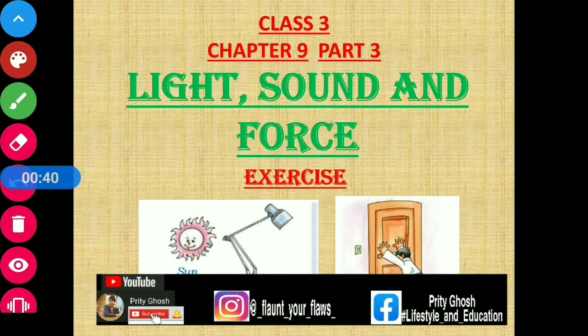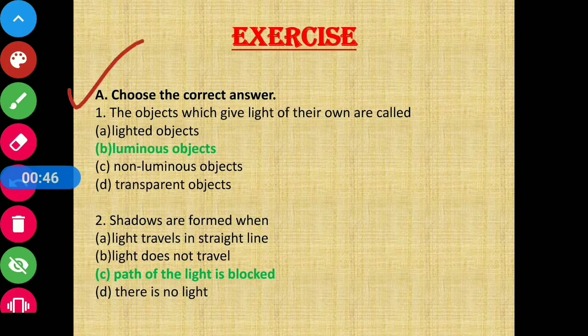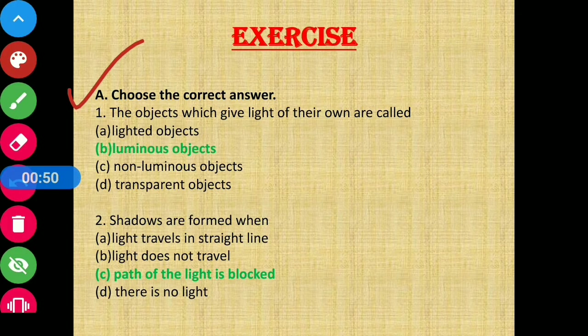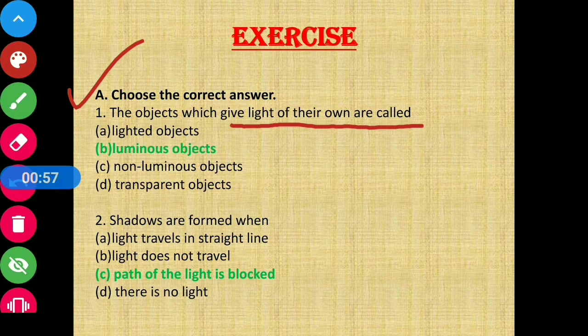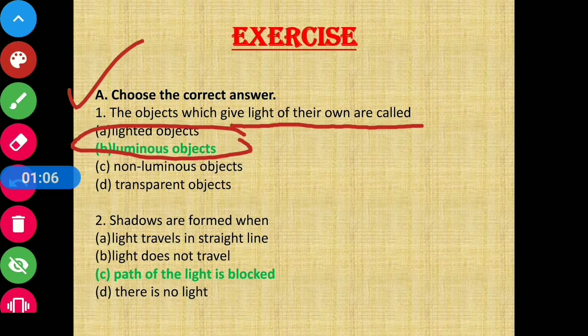So without further ado, let's start with today's class. Section A: Choose the correct answer. Question number one: The objects which give light of their own are called - jo objects khud se light deti hai unko kya kaha jata hai? These objects are called luminous objects, so option B is the correct answer.